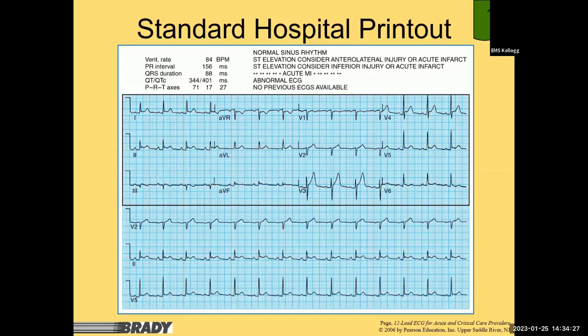Here is a standard hospital printout — normal sinus rhythm with ST elevation, considered anterior lateral injury or acute infarct, and ST elevation considered inferior injury or acute infarct: abnormal EKG. For an inferior MI you'd look at leads 2, 3, and AVF. The printout gives you the standard waveform information plus additional leads — V2, lead 2, and V5 (sometimes V1 instead of V2) — along with a wealth of additional information the hospital uses.